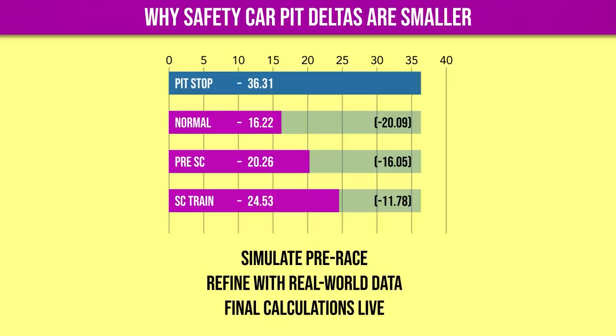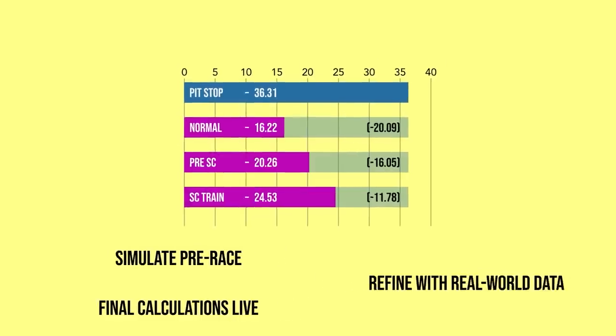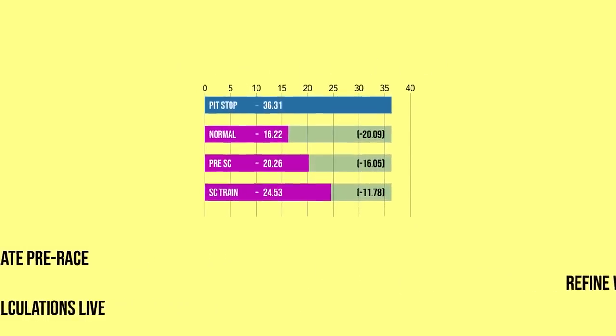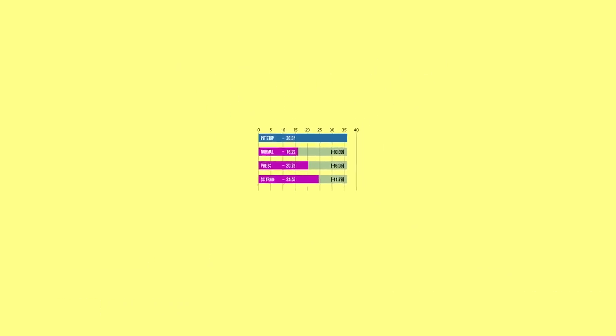So that's the pit delta and how it can change from circuit to circuit and be massively shortened by a safety car — maybe something you instinctively knew, but now you have the visuals to help understand it more completely.